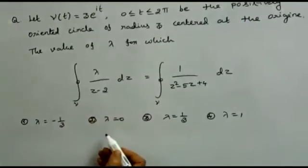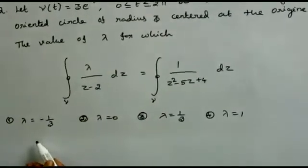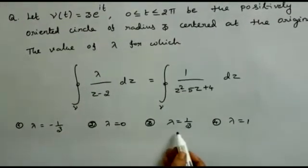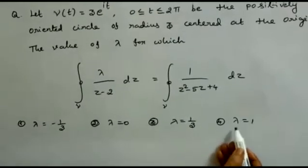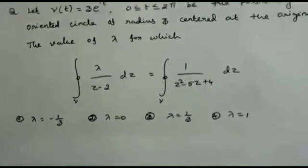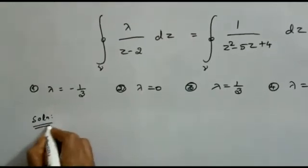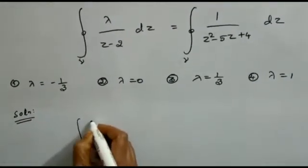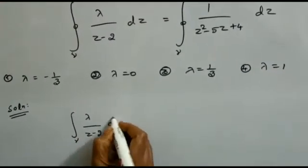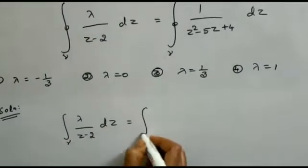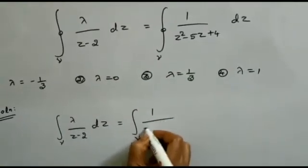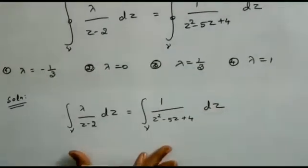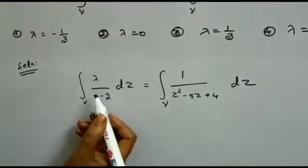The possible values of lambda are: lambda equal to minus 1 by 3, lambda equal to 1 by 3, and lambda equal to 1. The given condition states: the integral over gamma of lambda divided by (z minus 2) dz equals the integral over gamma of 1 divided by (z squared minus 5z plus 4) dz. We need to find the value of lambda using integration.